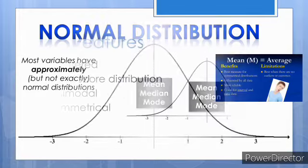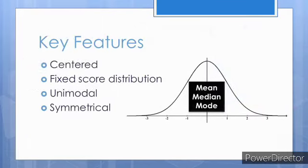Normal distributions share several key features. They are unimodal, meaning that there is only one peak in the distribution. When divided at the mean, a normal distribution takes the form of a symmetrical bell-shaped curve.